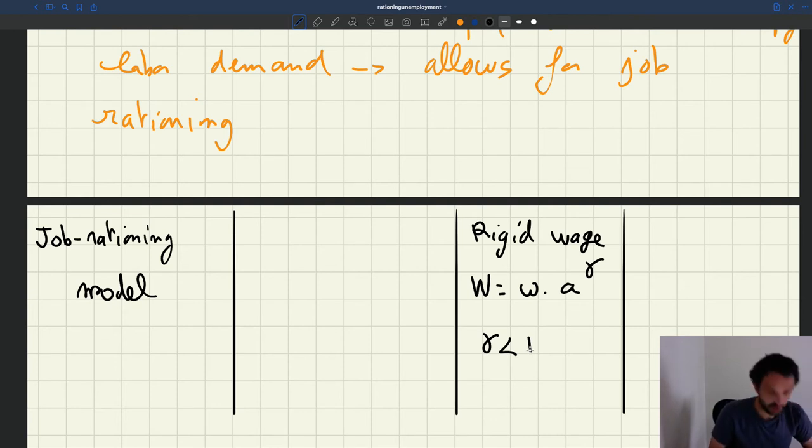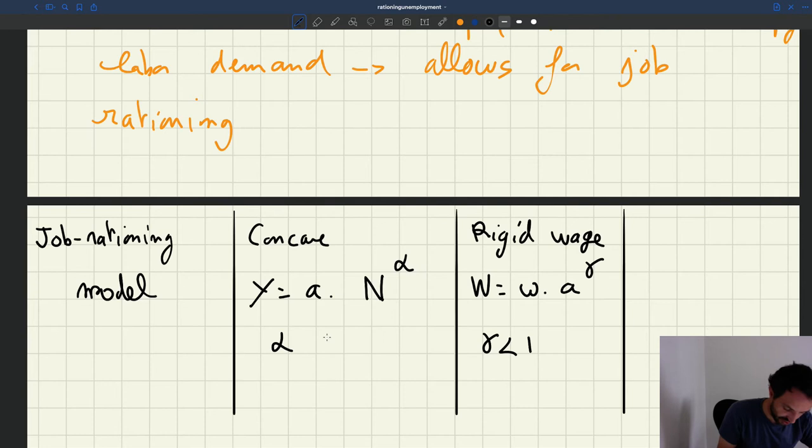Here we are going to introduce in the job rationing model a concave production function. It's going to look something like output is productivity times number of producers to the power of alpha, where alpha, the shape of the production function, is strictly less than one.